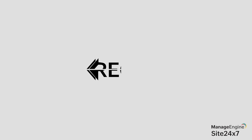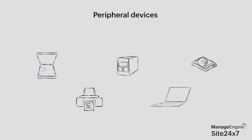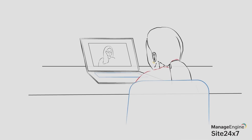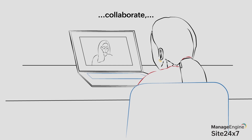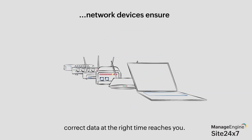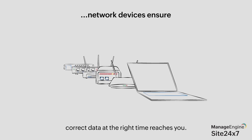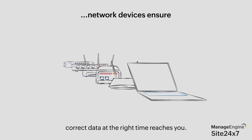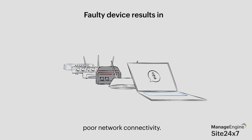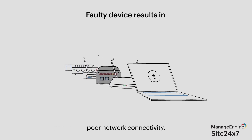That's it about the devices in a network. To recap, we saw the different network devices and the peripheral devices used in most networks. So, whenever you watch a video over the internet, collaborate with a colleague in another location, send an email, take a printout, or even browse the internet, think about how several devices perform different functions in the background to ensure that you receive the correct information at the right time. A faulty device or an accidental power-off, even in one of the devices, may result in poor network connectivity.